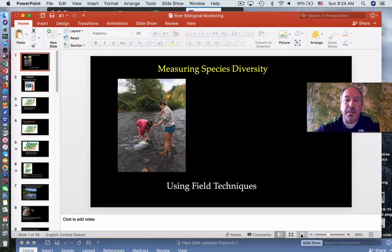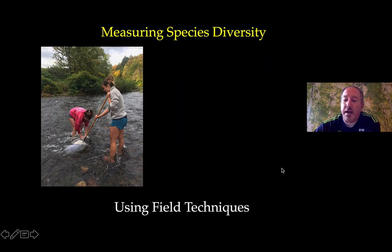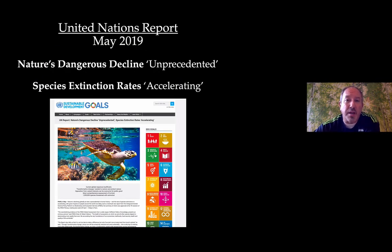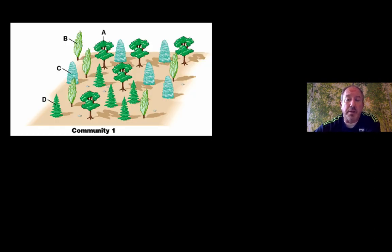In the spring of 2019, the United Nations released a report that was pretty sobering in nature. It was describing an unprecedented decline in species diversity and number of species on our planet, and transformative change is needed. This is our rationale for this discussion, and also a call to stand up and do something about it. In order to understand what is necessary, let's discuss a few basic fundamentals about species and how they exist within a community.